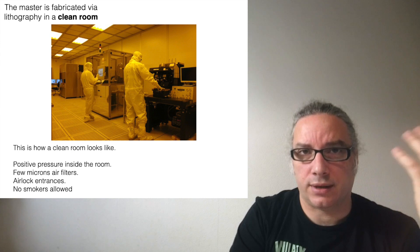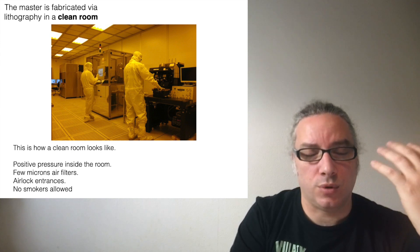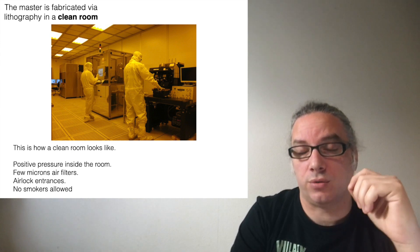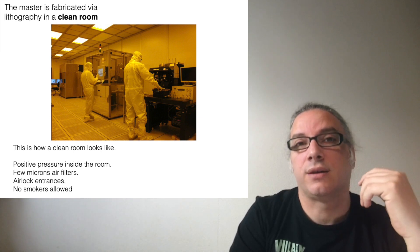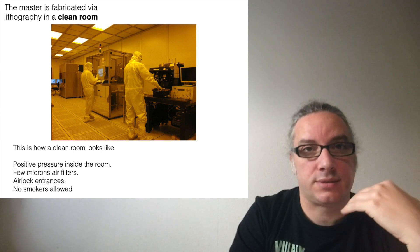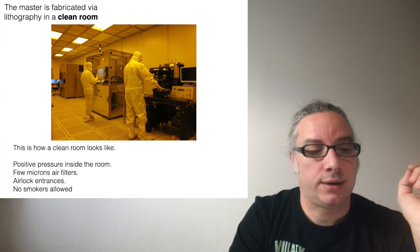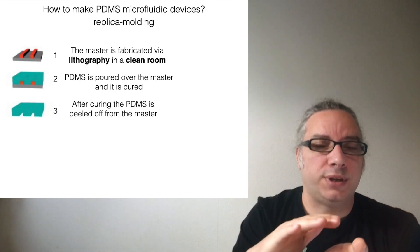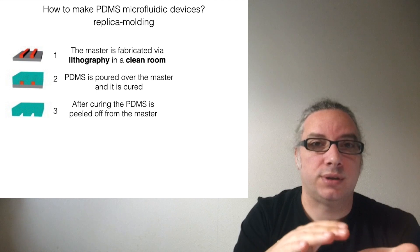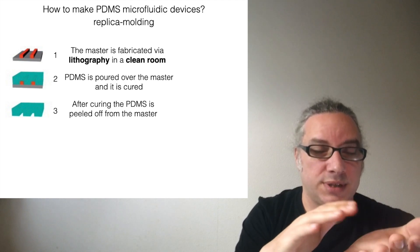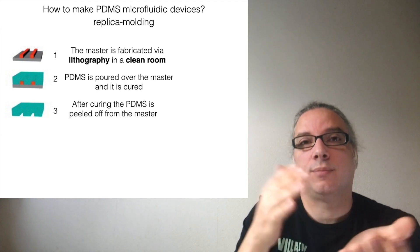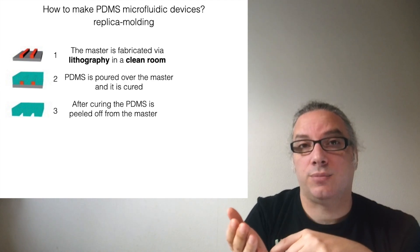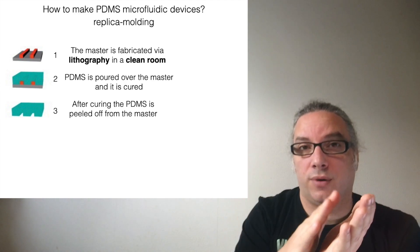For doing this you don't really need a clean room most of the time, but if you want to go really small in the microfluidic channel you need a clean room, because if you have one speck of dust it will completely clog your channel. You put your PDMS — which is a liquid — into the oven, it cures and cross-links. You can peel it off from your master, and then you seal it on top of the glass.